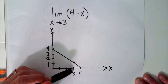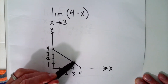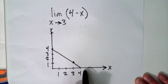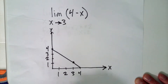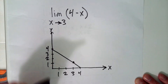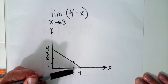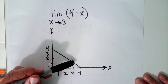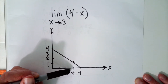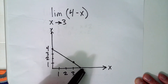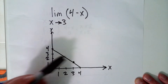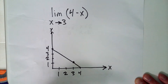As x approaches 3 from the left, the function value approaches 1. As x approaches 3 from the right, the function value approaches 1. So the limit is 1. That's the definition of the limit: as you approach this limiting value, if the function value approaches the same value from the left as it does from the right, then the limit exists. And you can see the limit is 1.